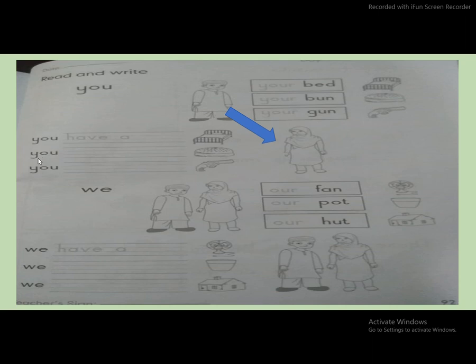Next, you—what do you write here? Have a. You have a bun. Next, you have a gun. Very good.